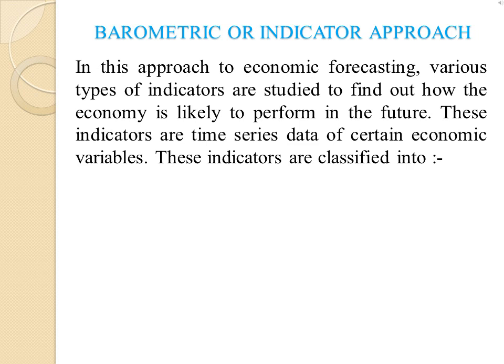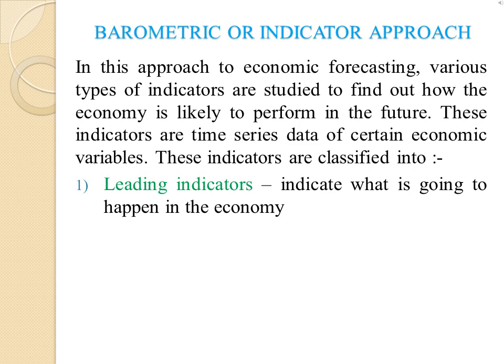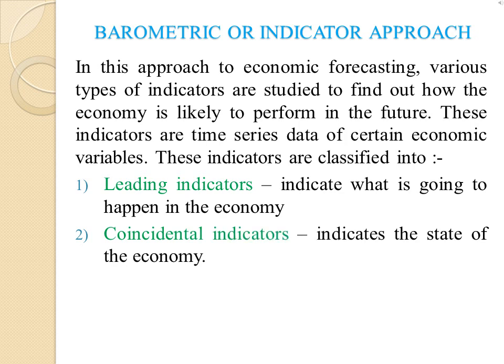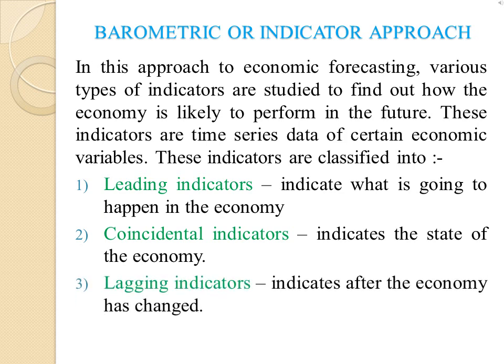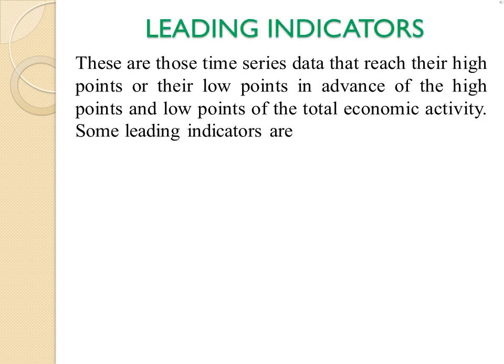The three types of indicators are: leading indicators, which indicate what is going to happen in the economy; coincidental indicators, which indicate the current state of the economy; and lagging indicators, which indicate that the economy has already changed. Leading indicators reach their high points or low points in advance of the high points and low points of total economic activity.